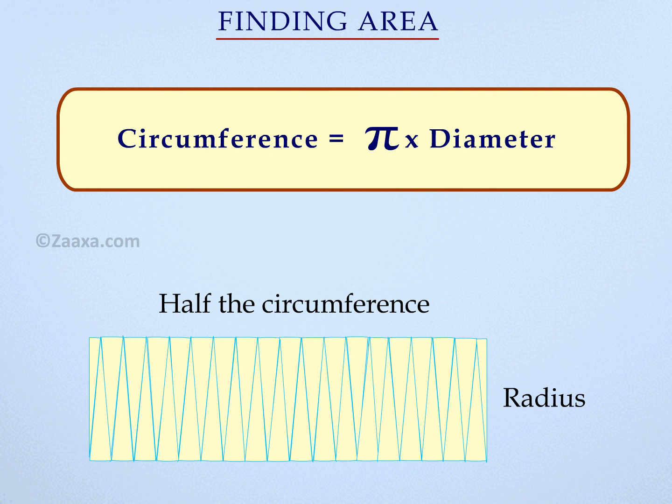You already know that the circumference of a circle is pi times diameter, so we can say that half the circumference is pi times radius.